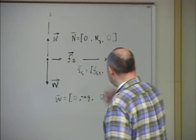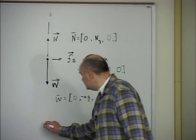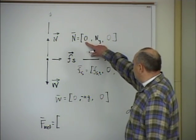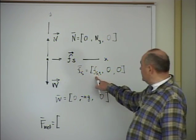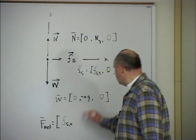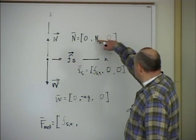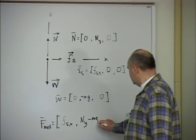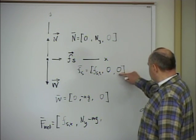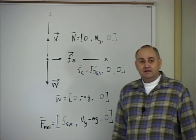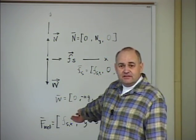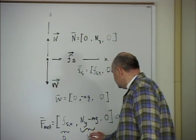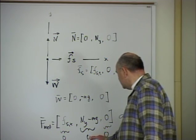My acceleration is zero, which means that if I add those three forces I get zero. The x component of the net force is FSX. The y component is NY minus mg. The z component is zero. Since I'm standing still, all three components are zero — so the y component of the normal force must equal mg, meaning normal force is 2,000 newtons up and weight is 2,000 newtons down.